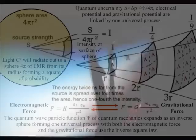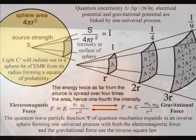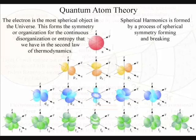Where some theories see disunity, disharmony and chaos, this theory sees oneness, unity and harmonics that can only be formed by one universal process of spherical symmetry forming and breaking.